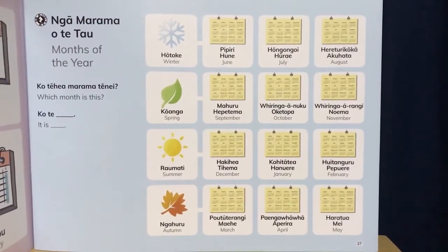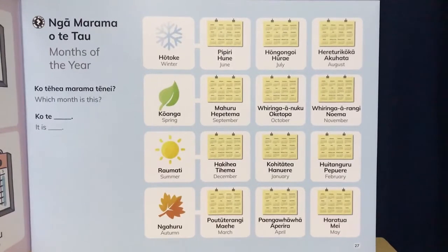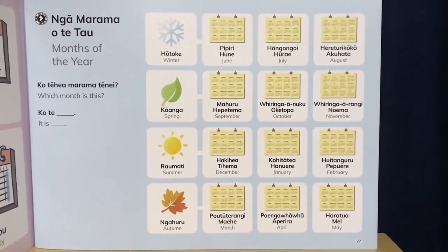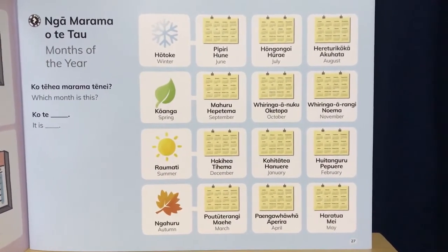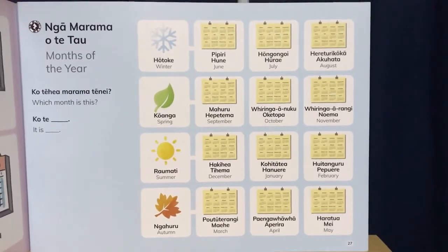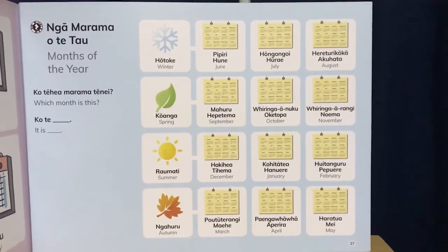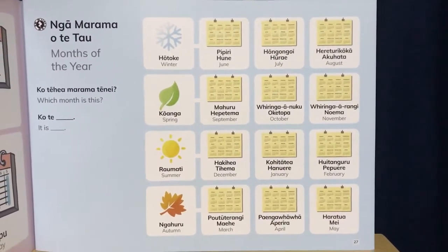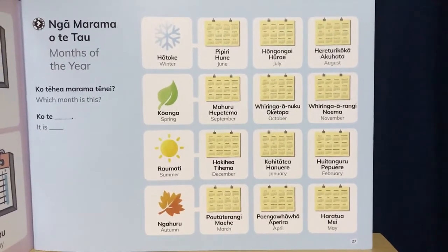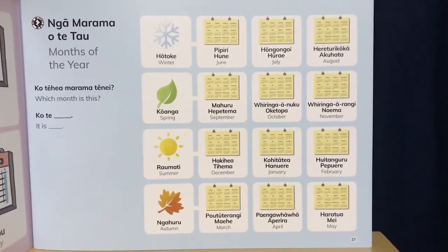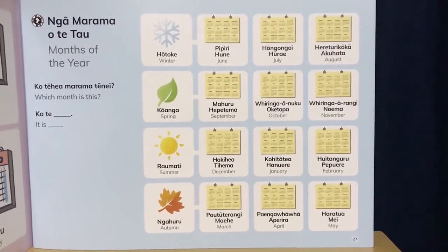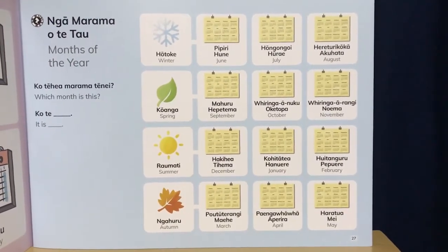Let's look at summer: raumati. Note it's raumati, not raumati with a different stress — raumati is also a place name. For December it's hakihia and tihema. Hakihia, tihema.